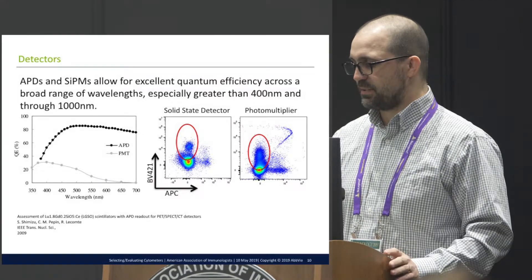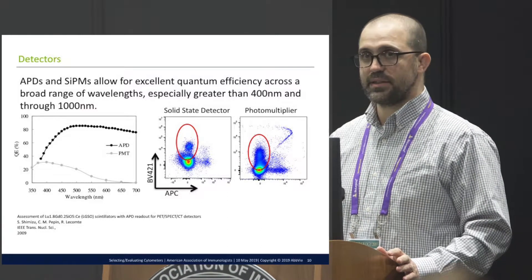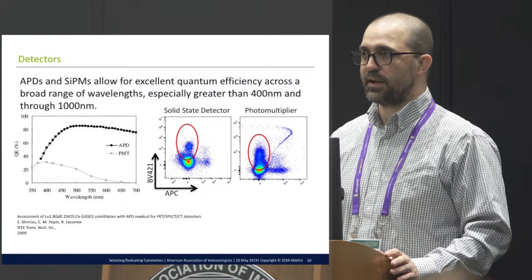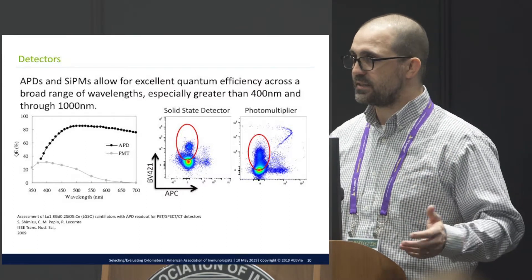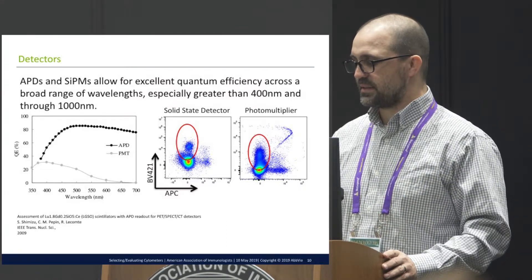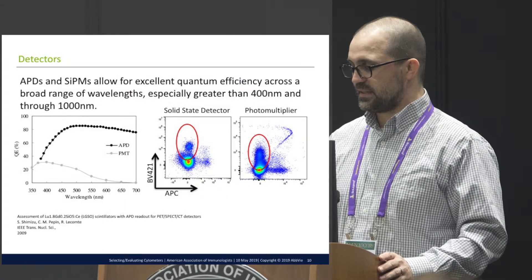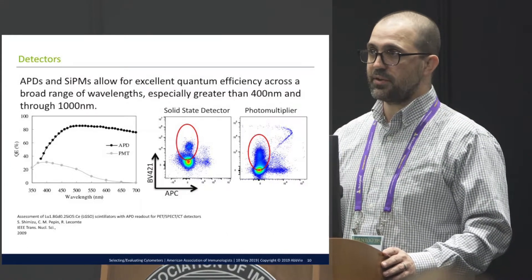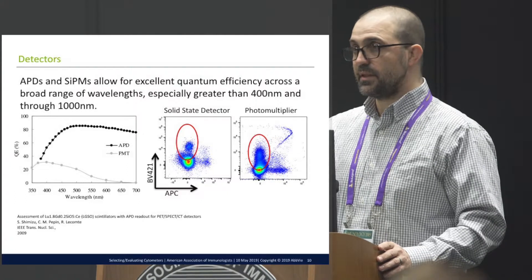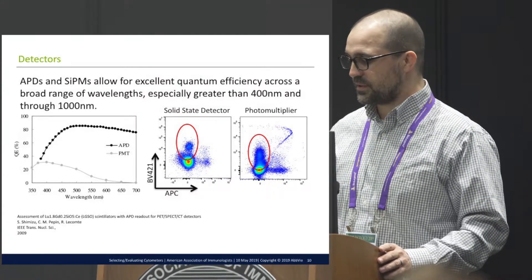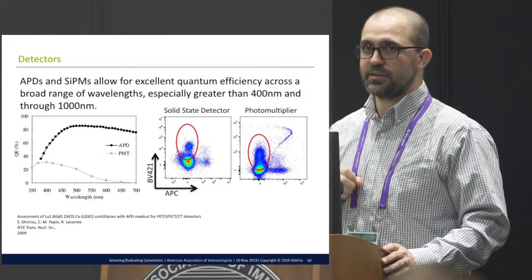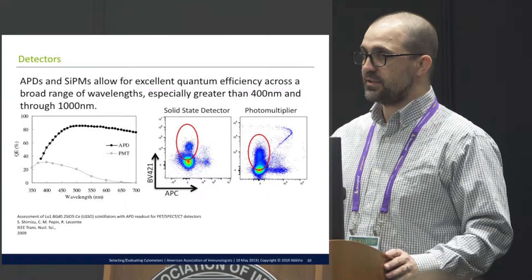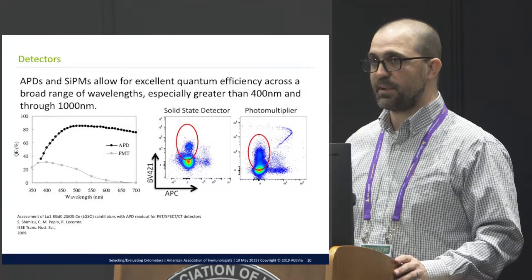This is a sample collected on an instrument that uses solid-state detectors versus one that uses photomultipliers. It's not a totally fair comparison because the instruments also have different laser powers and filters. But in general, what we typically see is tighter resolution of the negative cells and better resolution of DIM positives. Switching to solid-state photodiode-type detectors seems to have a better impact on collecting low amounts of photons from very dim signals, still giving good resolution and detection of populations.